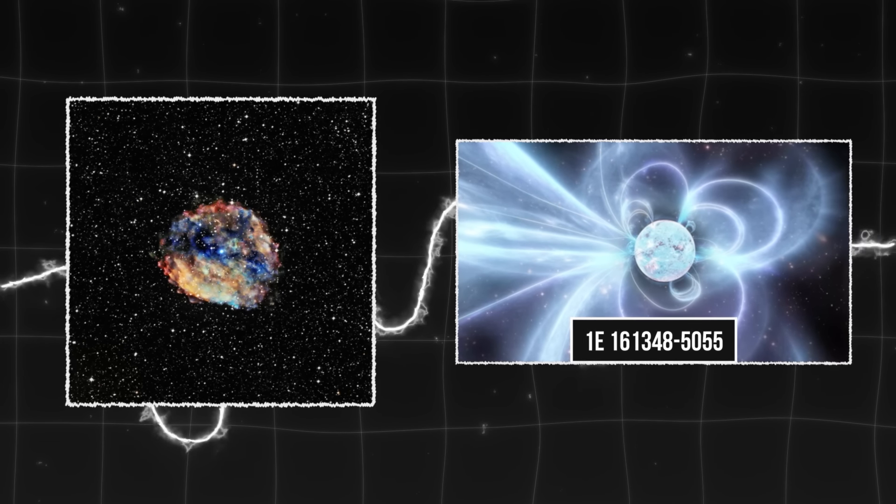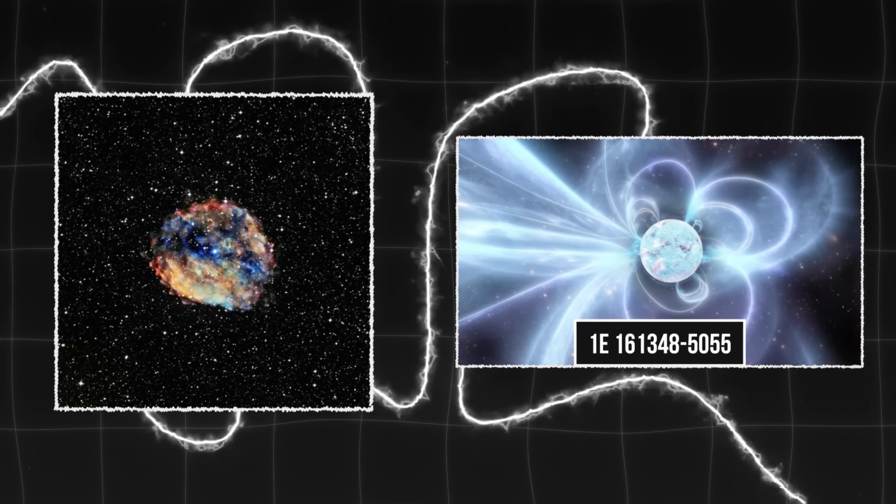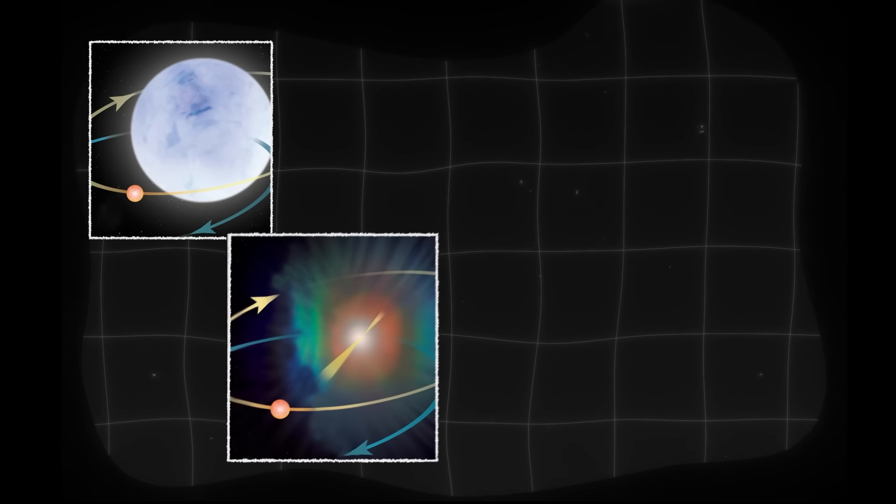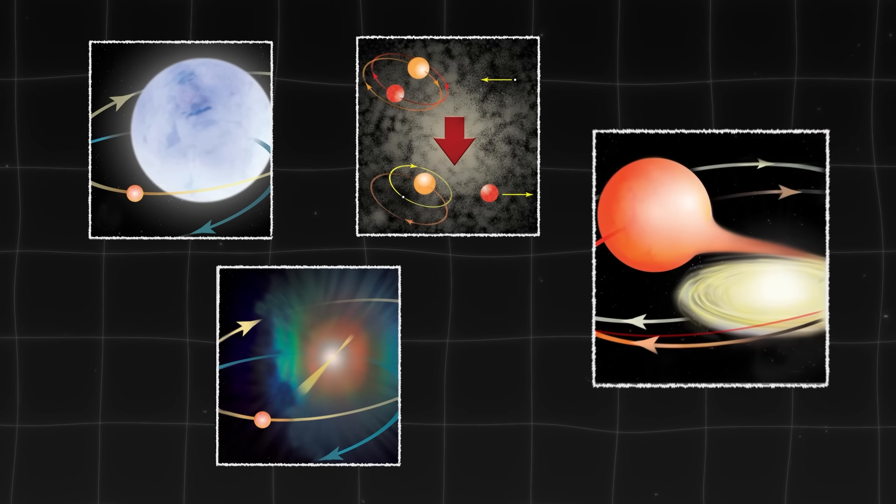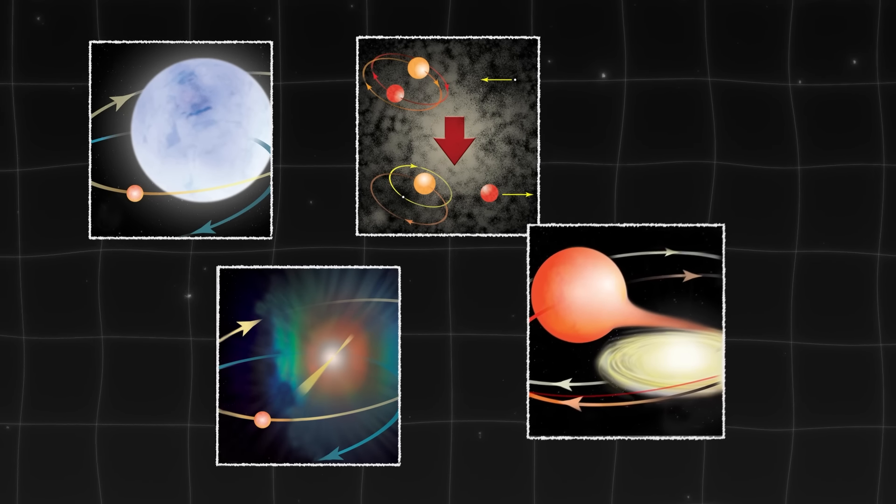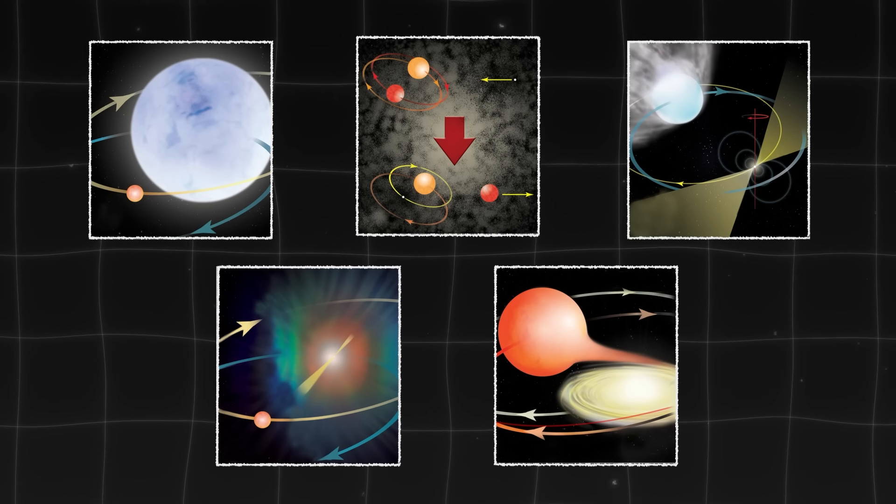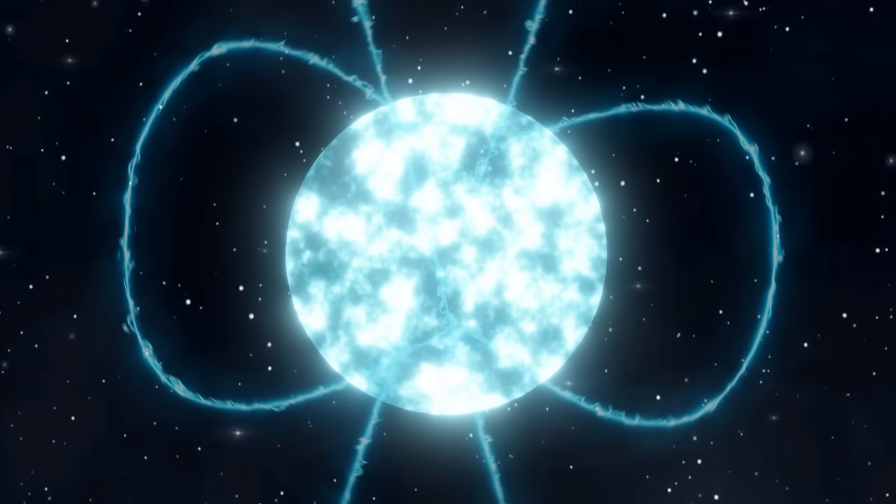Pero ninguna teoría explica por qué gira tan lentamente. La teoría más plausible es que después de la explosión de supernova que creó este magnetar, los restos de gas y polvo se adhirieron a las líneas del campo magnético, ralentizando significativamente su rotación. Pero, ¿y si hubiera una explicación más sencilla y aún más exótica?